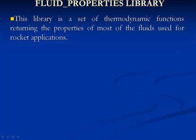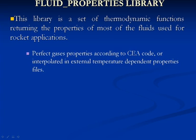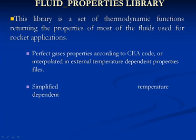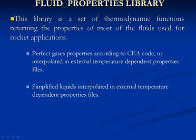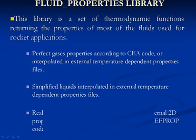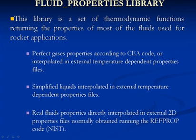ESPSS Libraries — Fluid Property Libraries. This library is a set of thermodynamic functions returning the properties of most fluids used for rocket applications. These include properties of perfect gases, either as per CEA code or interpolated in external temperature-dependent property files; simplified liquids interpolated in external temperature-dependent property files; and real fluids directly interpolated in external 2D property files, normally obtained by running the REFPROP code from NIST.